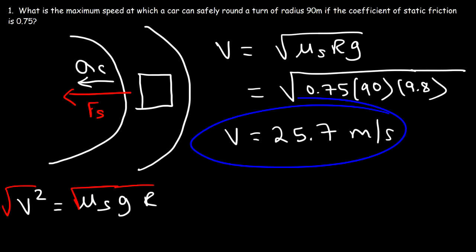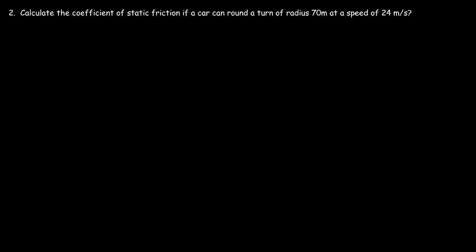That's how you find the maximum speed a vehicle can safely make a certain turn given the coefficient of static friction. Here's problem number two: calculate the coefficient of static friction if a car can round a turn of radius 70 meters at a speed of 24 meters per second.